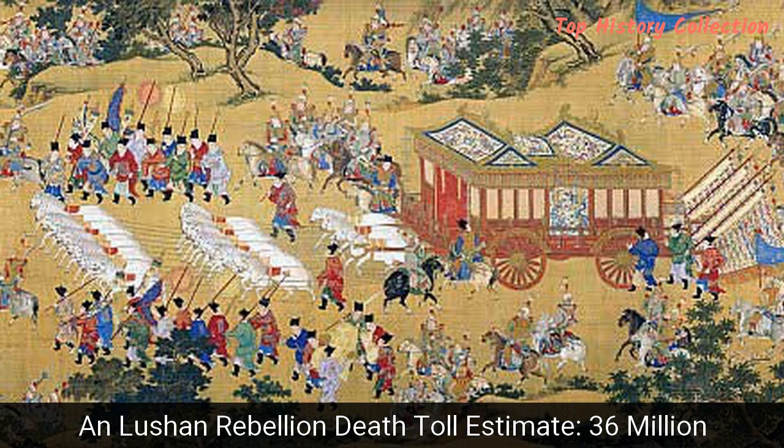Number 8: An Lushan Rebellion – Death Toll Estimate: 36 Million. Around 500 years before the Yuan, the Tang dynasty was in control of China. An Lushan, a general in the north of China, sought to take control and declared himself emperor, creating the Yan dynasty. The An Lushan Rebellion lasted from 755 until 763, when the Yan dynasty was finally defeated by the Tang Empire.